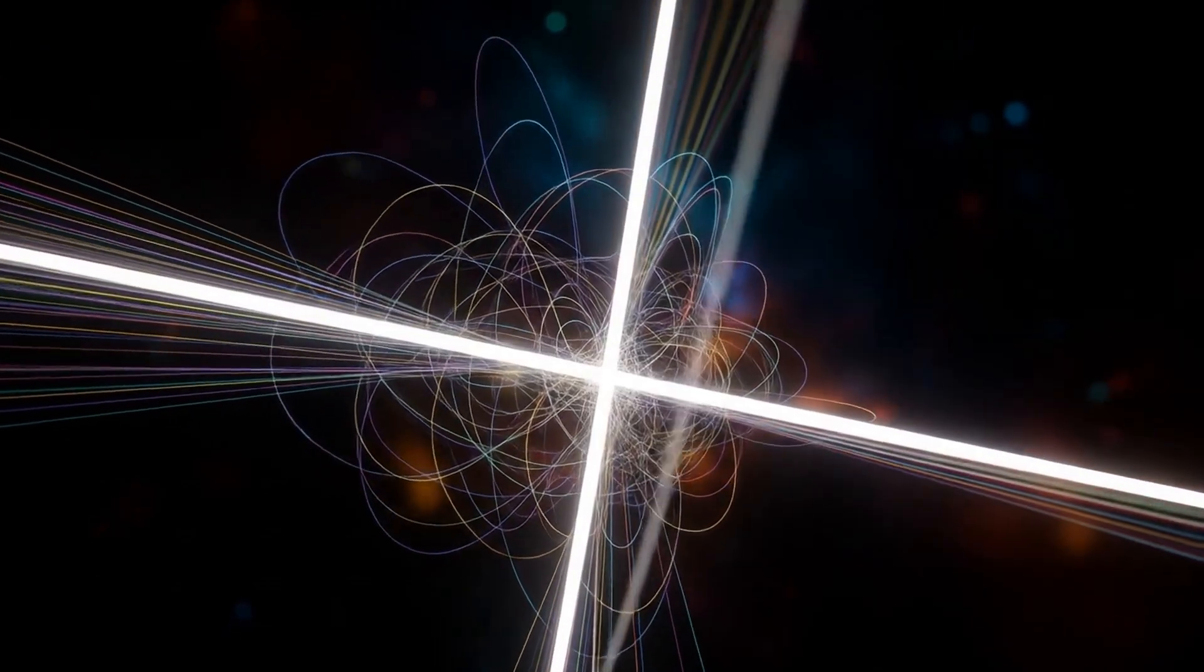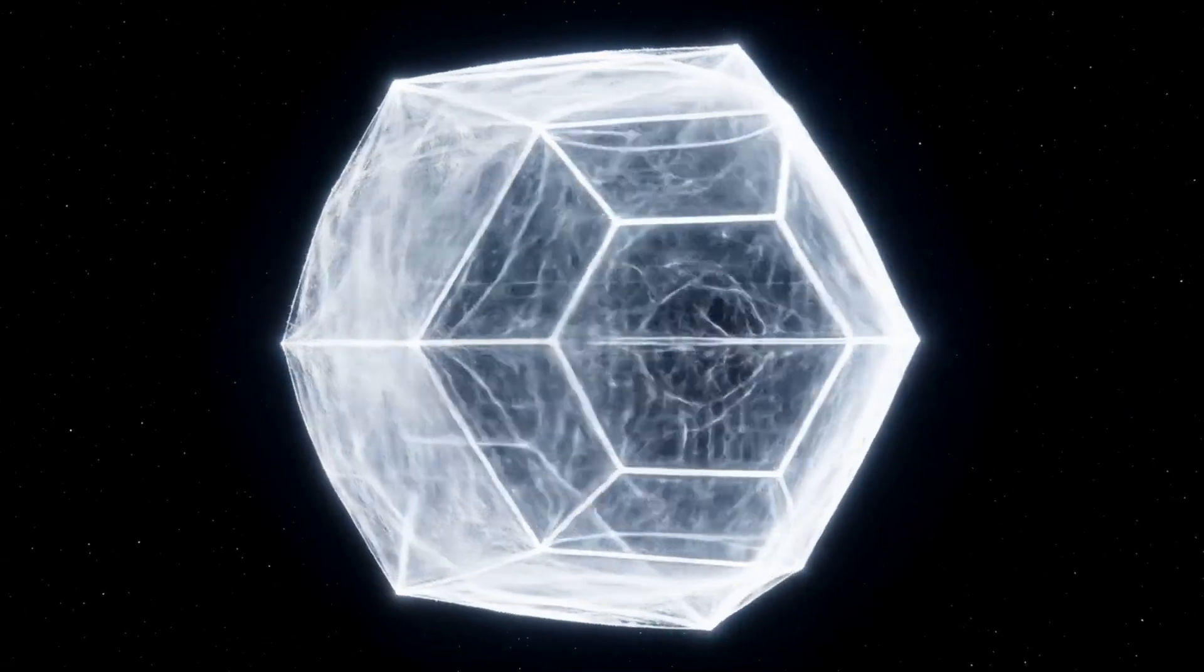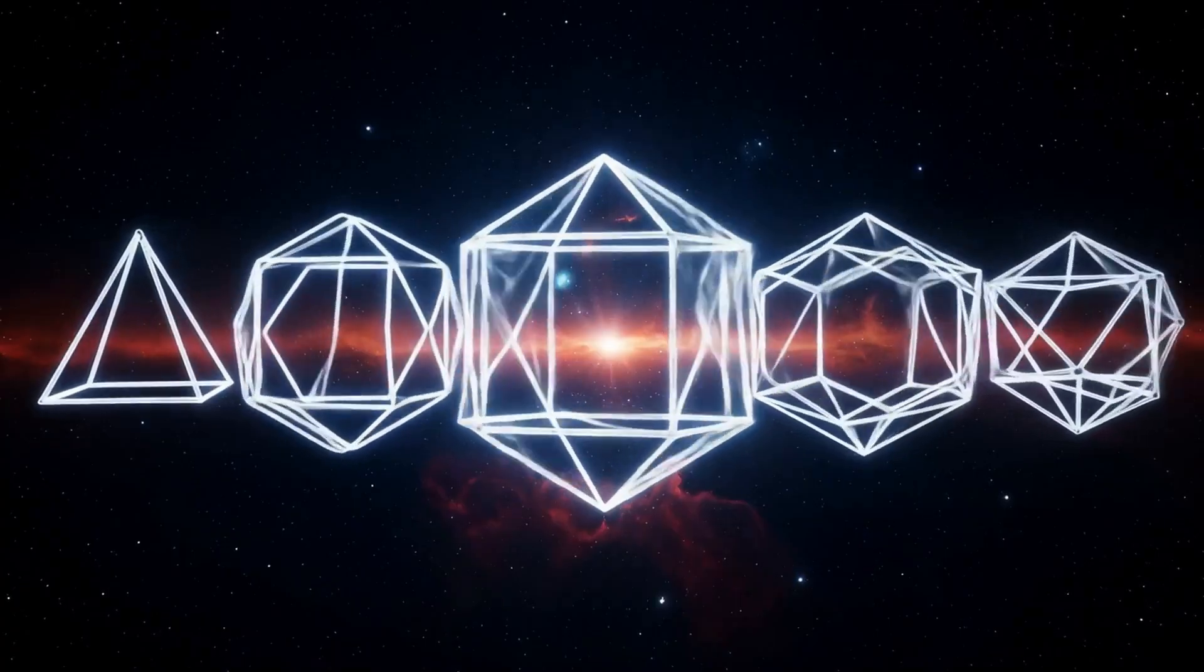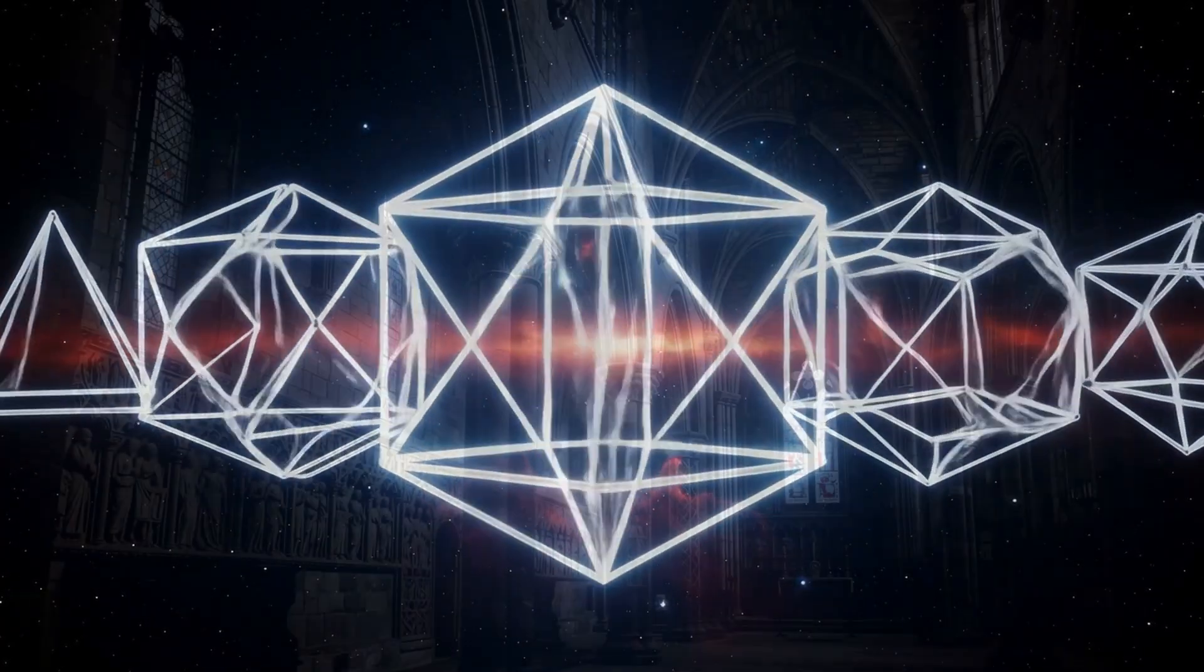Their volume represents how much coherence a shape can hold. Their surface reveals the slope of spin that etched them into being. And their symmetry is what allows reality to remain stable.